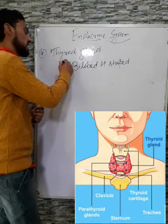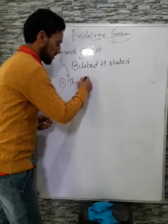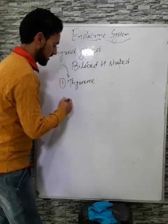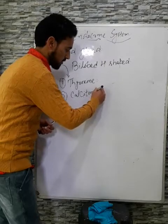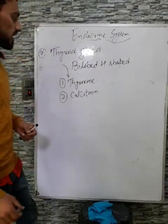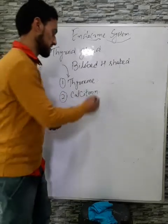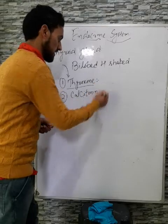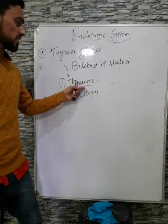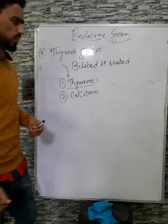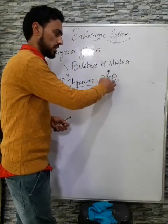The thyroid gland secretes two types of hormones. The first hormone secreted by the thyroid gland is thyroxine, and the second is calcitonin. Thyroxine controls a number of functions in our body — it controls the BMR (basal metabolic rate).